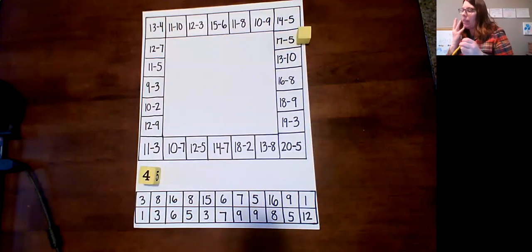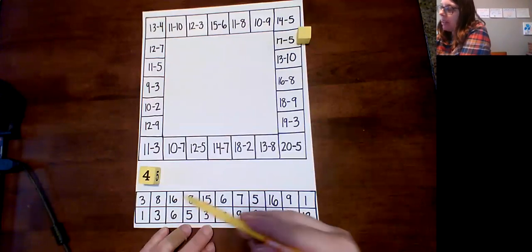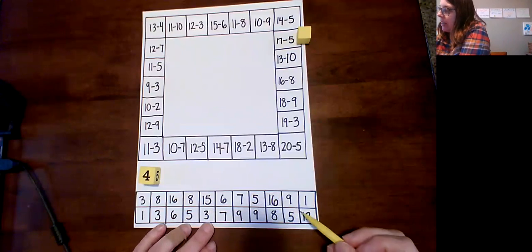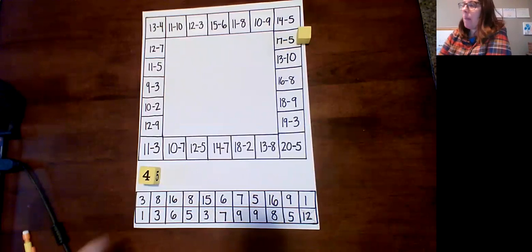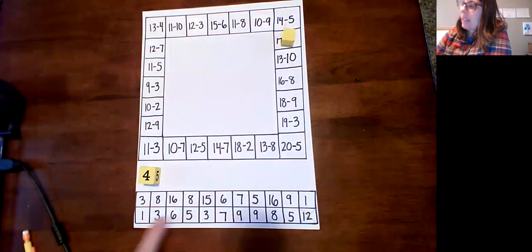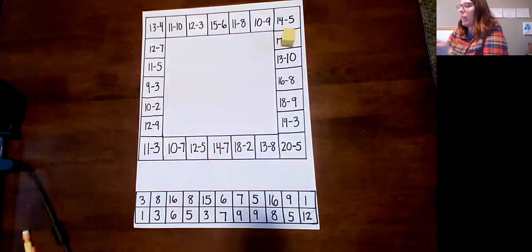So 17 minus 5 is 12. Then I need to find a 12 somewhere around here and X it off. Right, we're gonna keep going. See how many of these you can get crossed off.